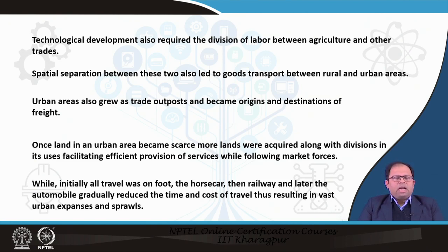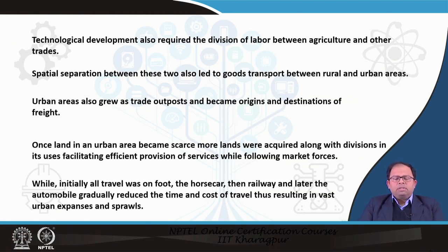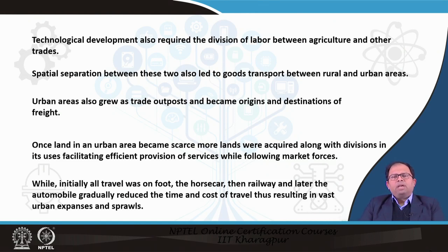Freight transportation also started, and we saw that some cities started growing as trade hubs. Some cities beside a river or beside the sea became ports, so trade started between cities as well. It was not only within the city and between the city and the peri-urban area, but trade also happened between cities. Highways and trade routes started forming as a result.